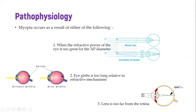Myopia can occur in three ways. The first is when you have a very strong refractive index on your lens, so your lens is refracting or bending light too much, making the image form before it reaches the retina. The second possibility is having a longer or bigger eye globe compared to a normal one, meaning it takes a greater distance for the light to reach the focal point on the retina, so light ends up focused in front of the retina.